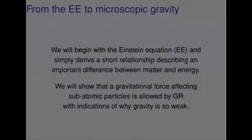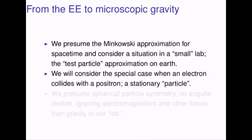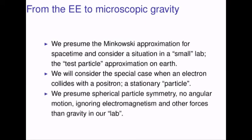We will begin with the Einstein equation and simply derive a short relationship describing an important difference between matter and energy. We will then show that a gravitational attraction force affects subatomic particles and is allowed by general relativity, with indications of why gravity is so very weak. We presume the Minkowski approximation for spacetime and consider a situation in a small lab — the test particle approximation on Earth. We will consider the special case when an electron collides with a positron, a stationary particle. We presume spherical particle symmetry, no angular motion, and ignore electromagnetism and other forces than gravity in our lab.